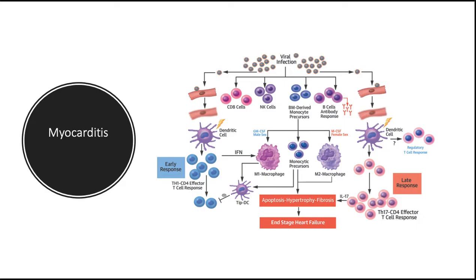The non-viral infectious causes of myocardial disease span the entire gamut of the microbial world. The protozoan Trypanosoma cruzi is the agent of Chagas disease. Although uncommon in the northern hemisphere, this disease affects up to half the population in endemic areas of South America, with myocardial involvement in the vast majority. About 10% of patients die during an acute attack, while others enter a chronic immune-mediated phase with development of progressive chronic heart failure and arrhythmia 10 to 20 years later.